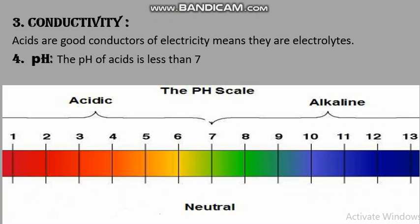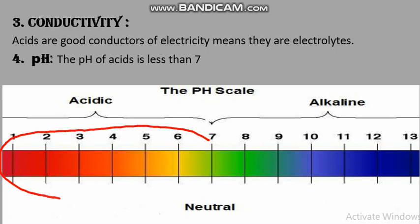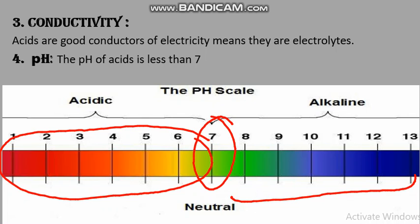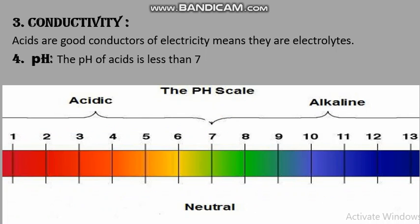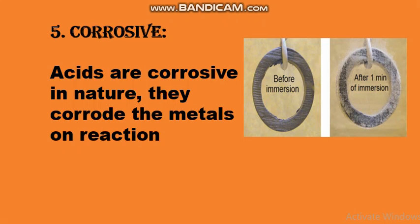Conductivity: acids are good conductors of electricity, meaning they are electrolytes. pH means power of hydrogen. The pH of an acid is less than seven — one through six indicates acid, and seven is neutral. Above seven, they are bases. Acids are also corrosive in nature; they corrode matter on reaction.